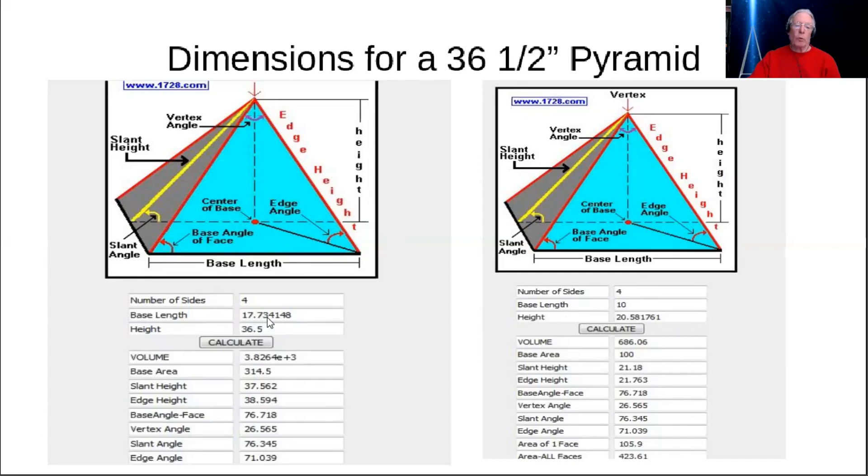If you go down, you'll see that ratio produces the very slant angle that we're looking for, which is 76.345 degrees. So we now know that for a pyramid height of 36 and a half inches, that we need a base length of 17.734 inches to have the base length be the right size. That is the remaining thing that we need to concern ourselves with as we build this pyramid going forward.